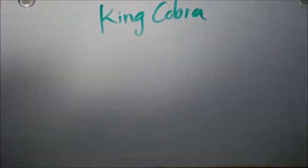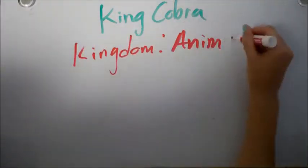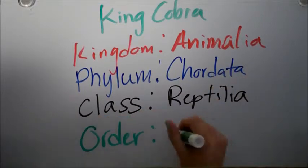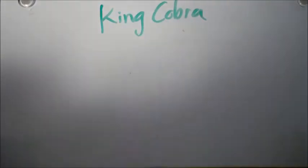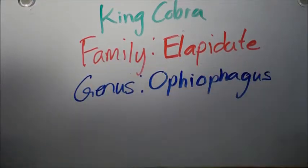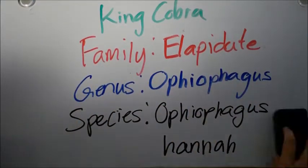So the snake, or the king cobra in this case, is from the kingdom Animalia, the phylum Chordata, the class Reptilia, the order Squamata, the family Elapidae, the genus Ophiophagus, the species Ophiophagus hannah.